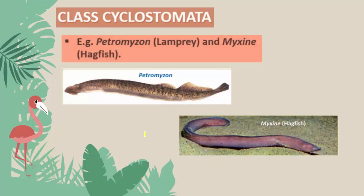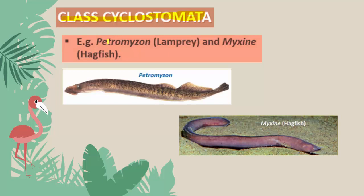Examples of class Cyclostomata: Petromyzon, commonly called lamprey, and Myxine, commonly called hagfish. Both have an elongated body with a circular mouth; they are ectoparasites; gills are for respiration; they show a closed circulatory system; and they visit fresh water only at the time of laying eggs. These are all the characters of class Cyclostomata.